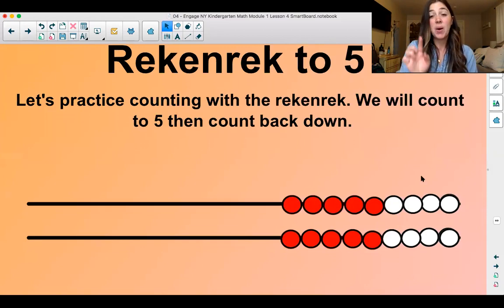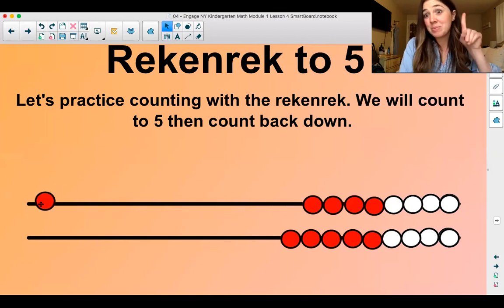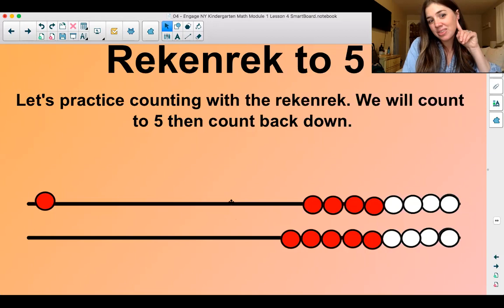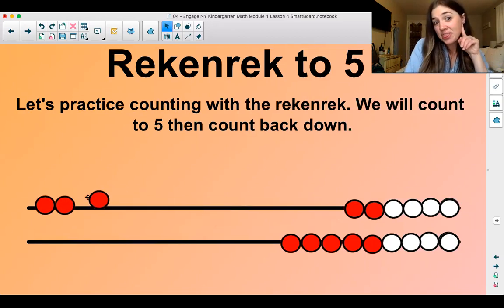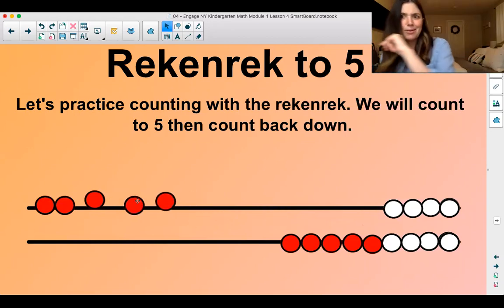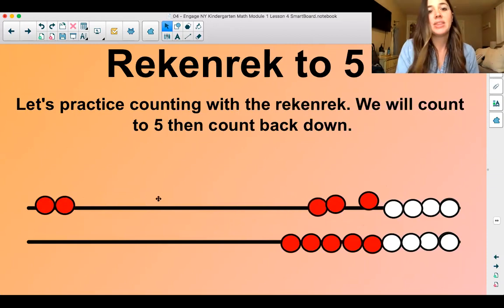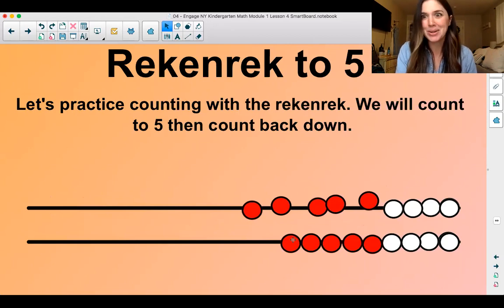Let's practice counting on the rekenrek. We'll count up to five and then we'll count down from five. Ready? One. Count with me. I want to hear you. Two. Three. Four. Five. Good. Now let's count down. Five. Four. Three. Two. One. Good. Do it one more time. I'll try to be a little quicker.